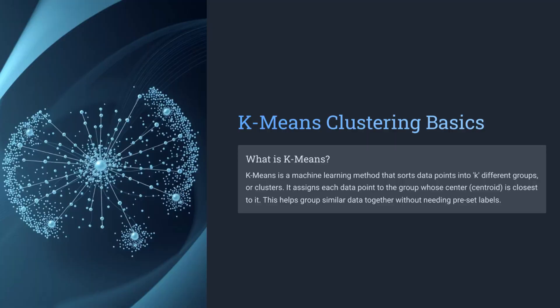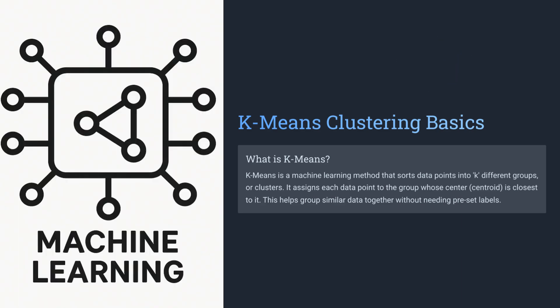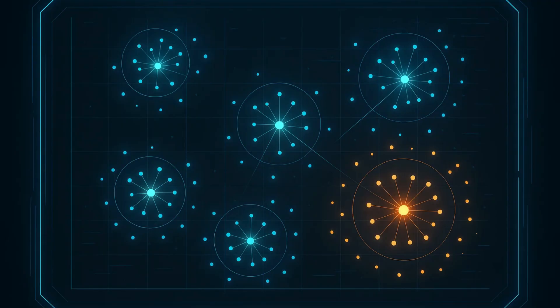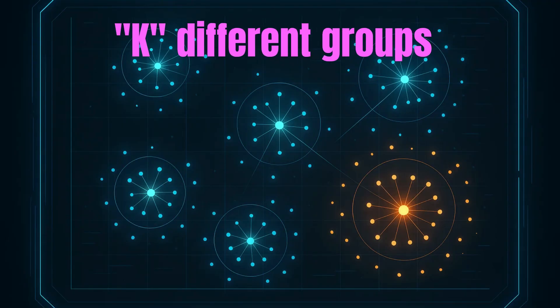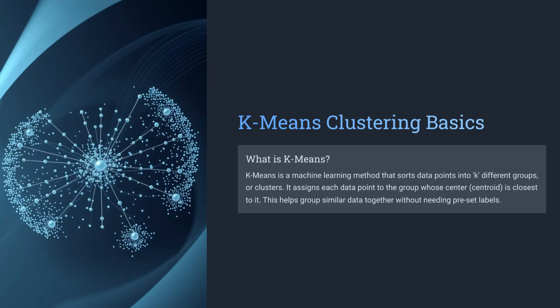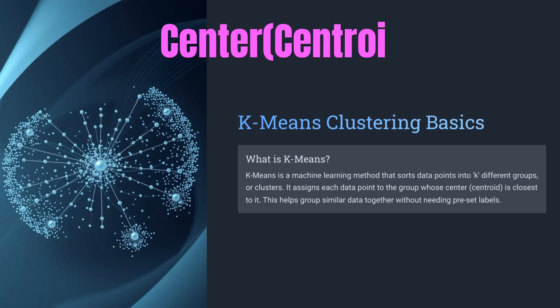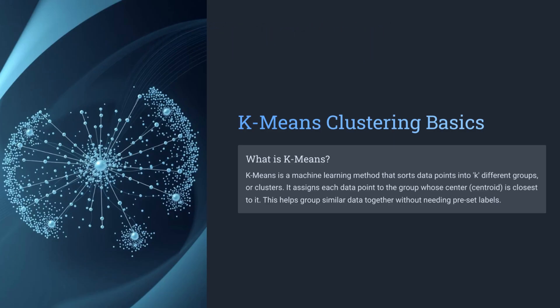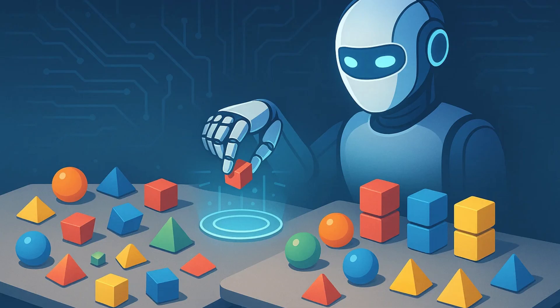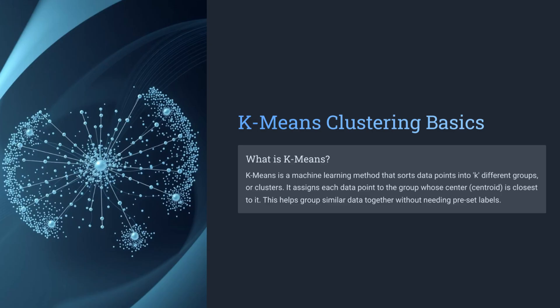Let's start with the basics. What exactly is k-means? K-means is a machine learning method that sorts data points into k different groups or clusters. It assigns each data point to the group whose center, or centroid, is closest to it. This helps group similar data together without needing preset labels. Think of it like organizing items into categories based on their similarities — no prior knowledge required.